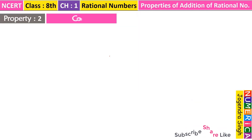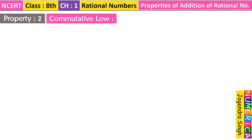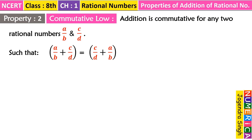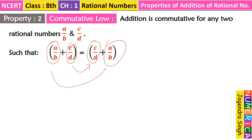Property number 2 is the Commutative Law. What is the Commutative Law? Just read this: addition is commutative for any two rational numbers A/B and C/D, such that A/B + C/D equals C/D + A/B. We apply the first rational number and then add the second one.